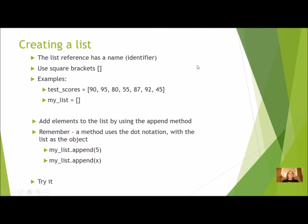How do you create a list in Python? First, give it a descriptive name or identifier just like any other variable. You use square brackets to indicate to the computer that this is a list and not a variable. For example, a list named 'test_scores' would use square brackets and list all values inside. Most of the time when starting a list you won't have the values yet, so you create an empty list with just the square brackets — the computer sets up a section in memory but it doesn't have any elements yet.